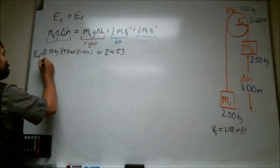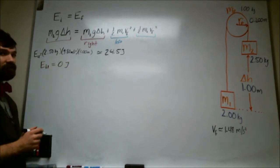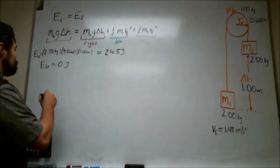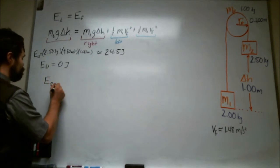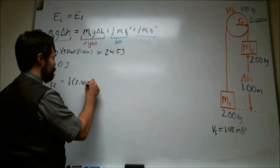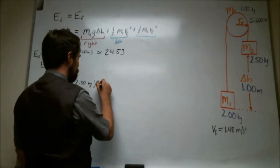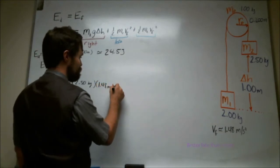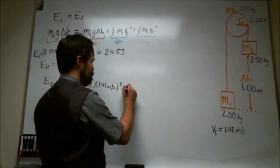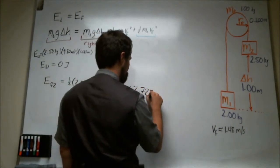So all we need then is the final energies. So for the bigger mass, the final energy is just this term. And so E final for number 2 is 1/2 times 2.5 kilograms times the speed squared. The speed was 1.48 so we have 1.48 meters per second squared. So that is going to be 2.72 joules.